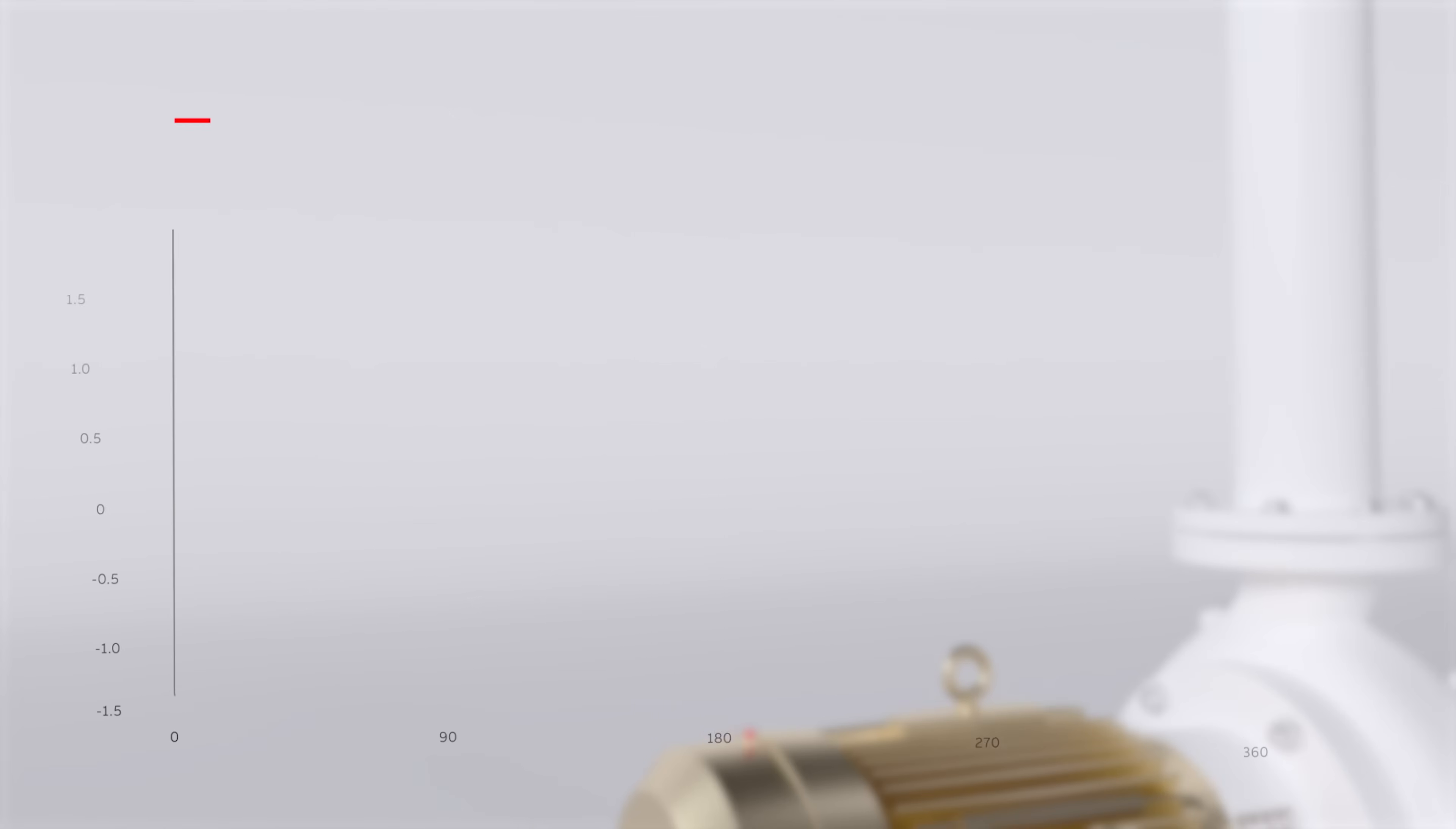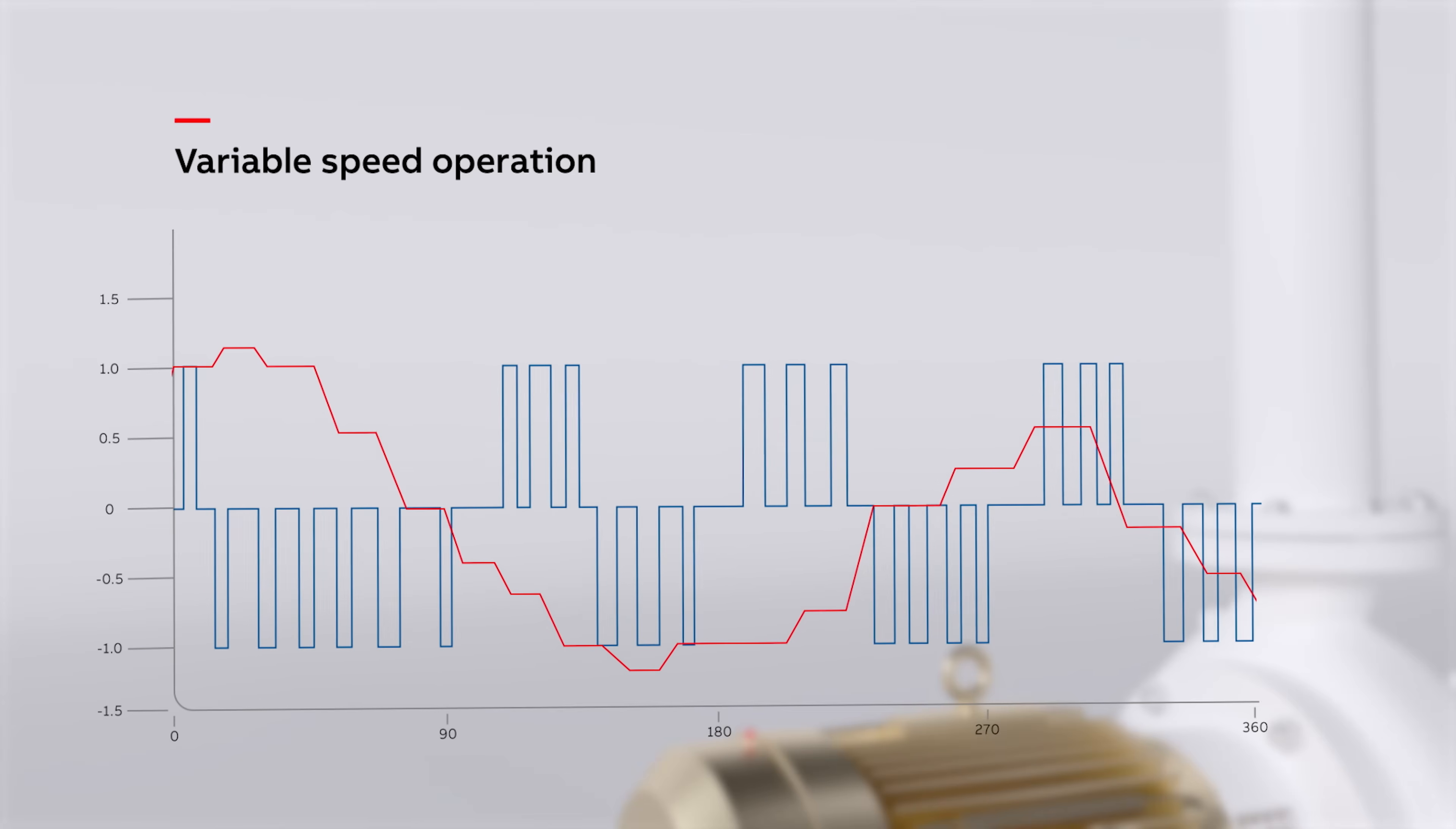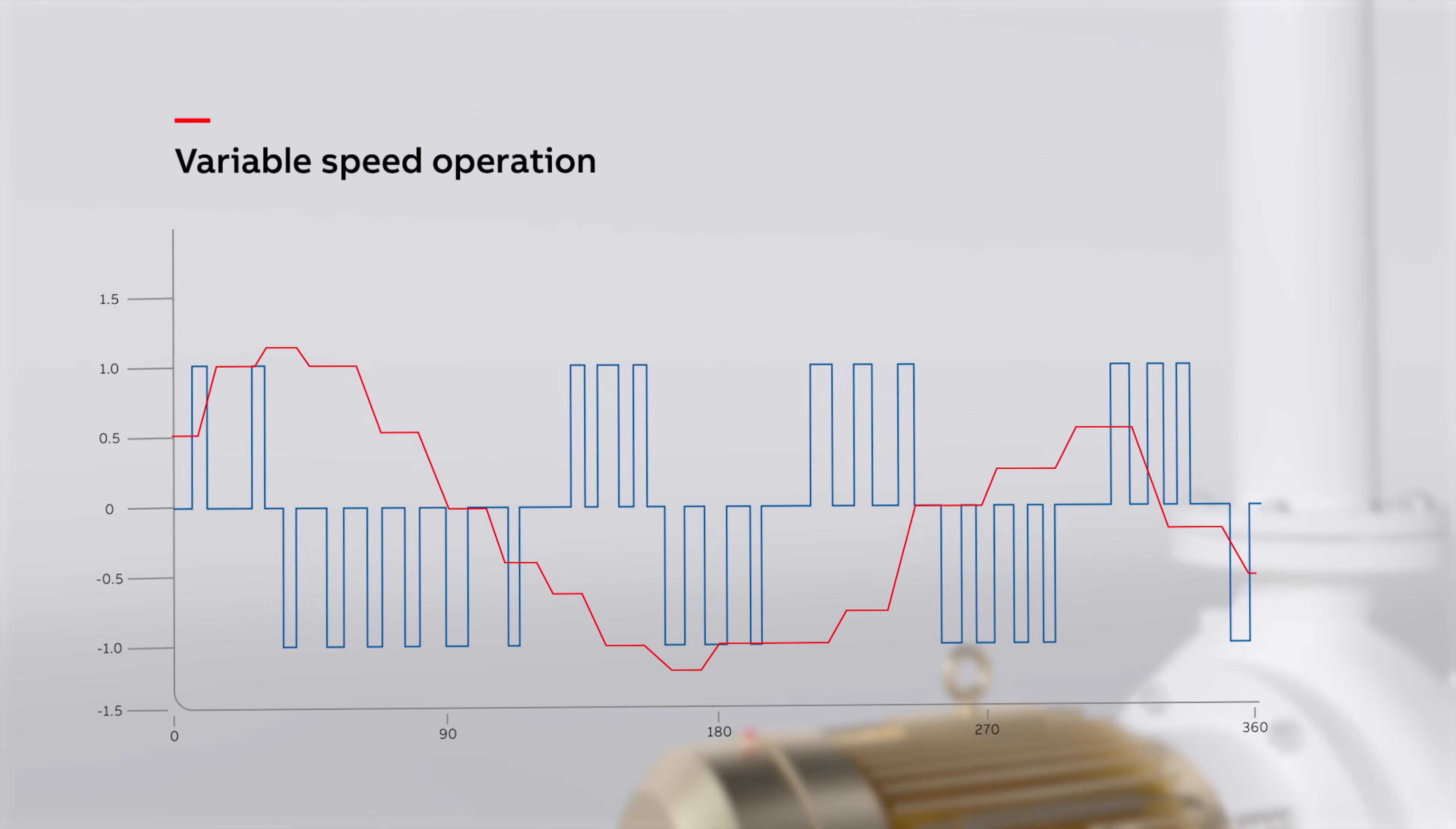When motors are controlled by a VFD, the power is converted to a series of high-frequency pulses that emulate the approximate sine wave, but is not exact with high harmonics. The result is an imbalance known as common mode voltage.